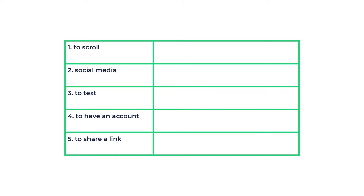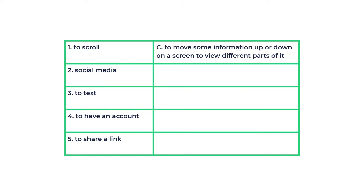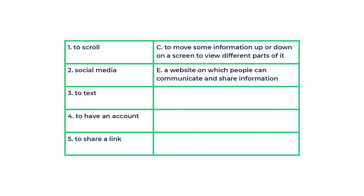Let's check together. 1. To scroll — to move some information up or down on a screen to view different parts of it. 2. Social media — a website on which people can communicate and share information.